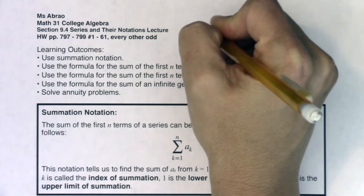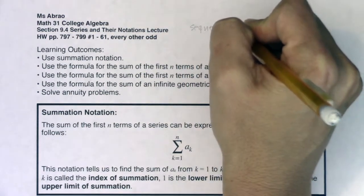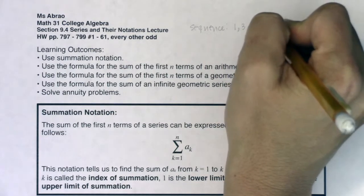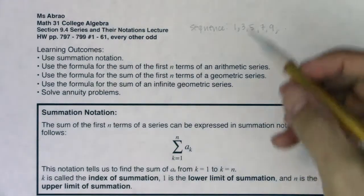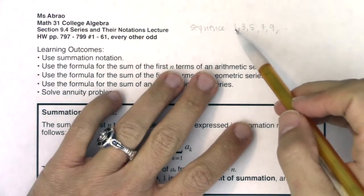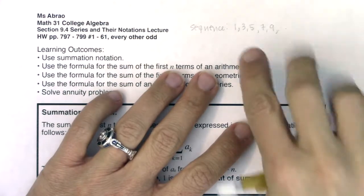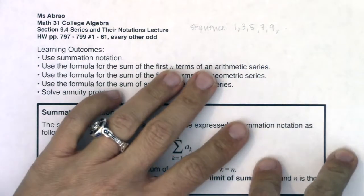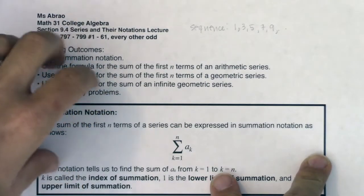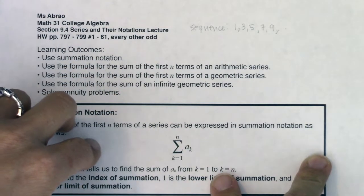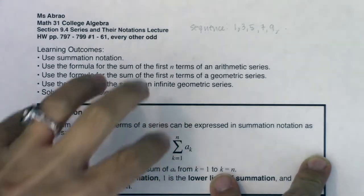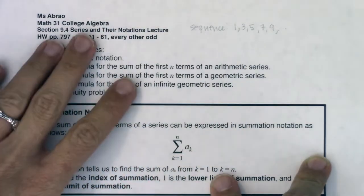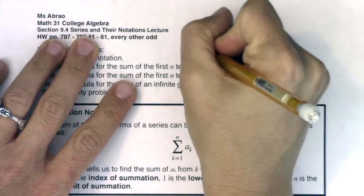If I was going to ask you about a sequence, it's a list of numbers separated by commas. This sequence I wrote out here happens to be an arithmetic sequence, but in sections 9.1 through 9.3 we looked at sequences — lists of numbers separated by commas. We looked at arithmetic sequences, both explicitly and recursively, geometric sequences explicitly and recursively, and in 9.1 sequences in general. And we're going to bump up in 9.4 to something called a series.